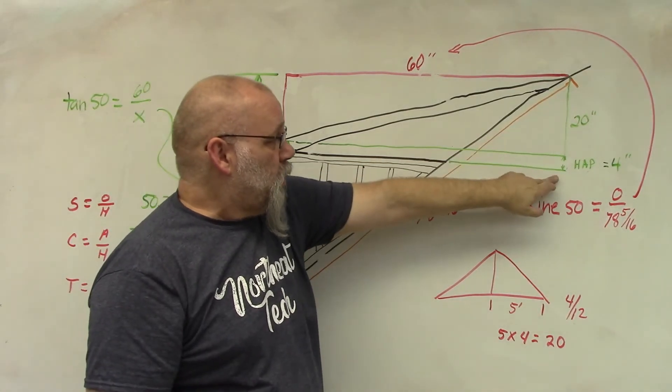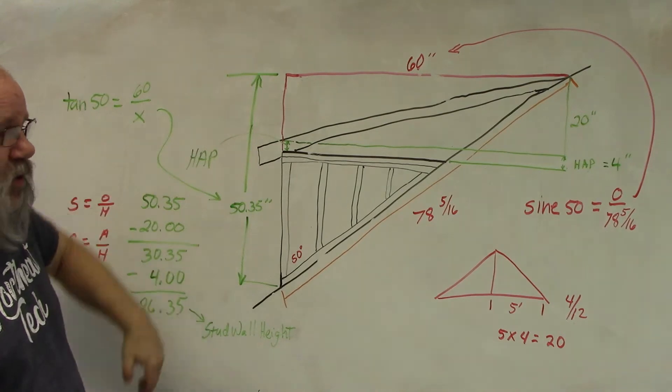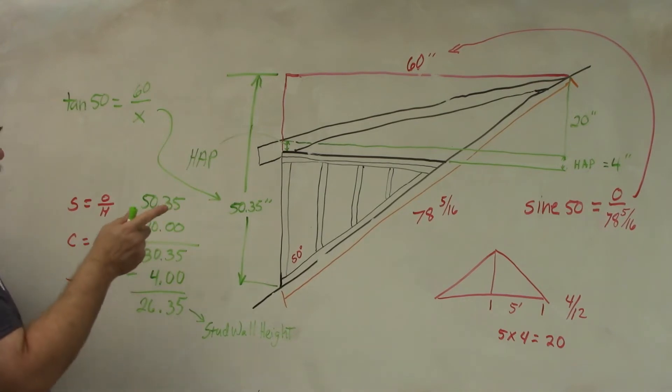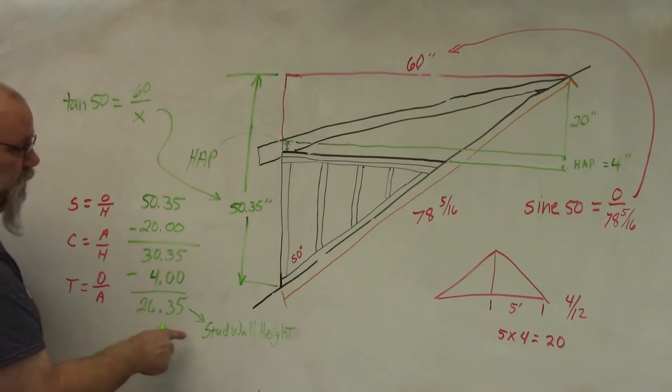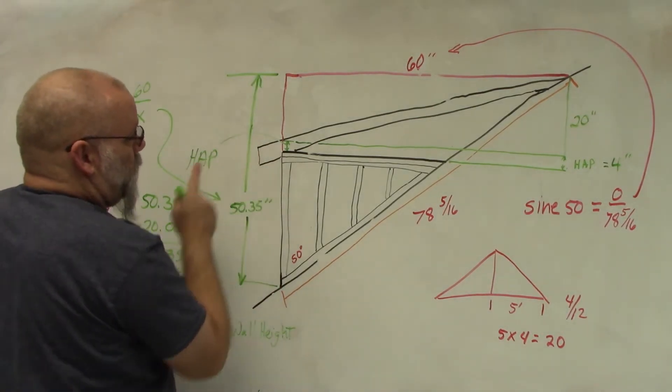All right, so that gives me 20 inches plus four inches for HAP above my stud wall. So then I start with my 50.35, I subtract off the 20 inches from my rafters that I need and four inches for HAP, and that leaves me a total height of 26.35 inches. So from this point to that point I have 26.35 inches of a height.